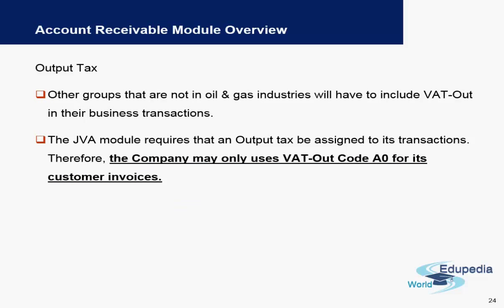We also have output taxes, similar to input taxes for vendors. Output taxes are basically taxes calculated on sales, and these are assigned along with tax codes. Tax codes are an easy way in SAP to track what percentage of tax has been charged on a particular transaction.